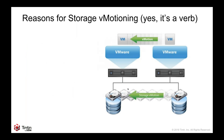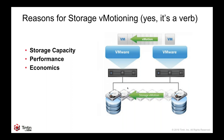Why would you do storage vMotion? It really comes down to two things: capacity and performance. As we looked at all the possible use cases, it keeps coming back to those two. If you're out of space on an existing array and buy a new one, that comes down to capacity. But economics comes into the picture — capacity comes in many flavors. You can have very high-performing, expensive capacity, or cheap and deep capacity that's less expensive.